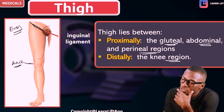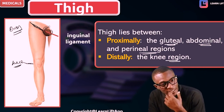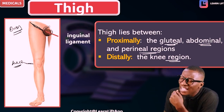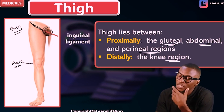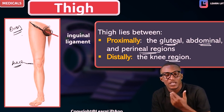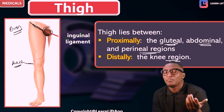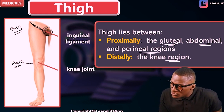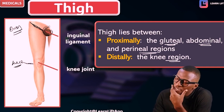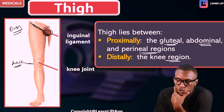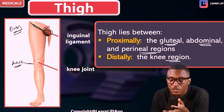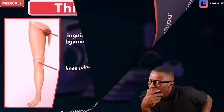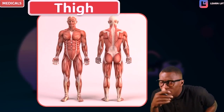Posteriorly you are going to see the gluteal region as well as the perineal region — this is the region that has the reproductive vessels. So take note that the thigh lies between the knee and above the inguinal ligament. After the inguinal ligament — which is the groin ligament — that's when you're going to see the gluteal region, the abdomen, and the perineum bordering the thigh.